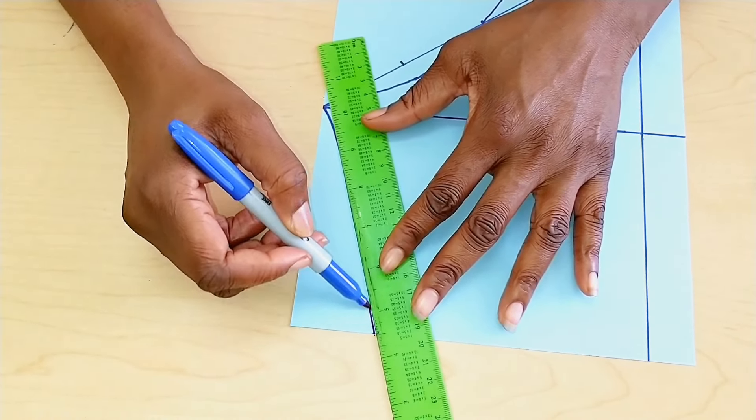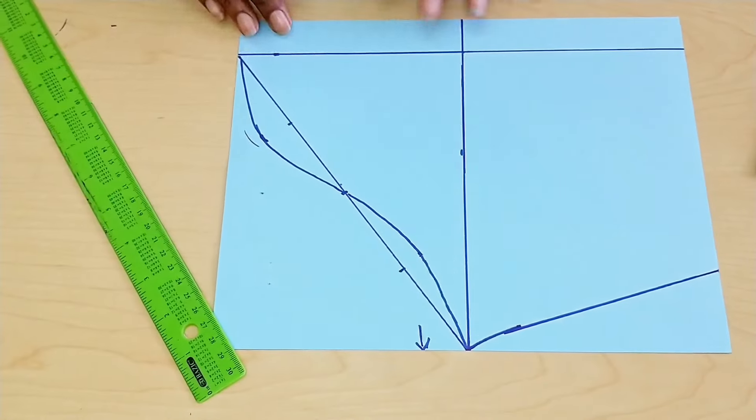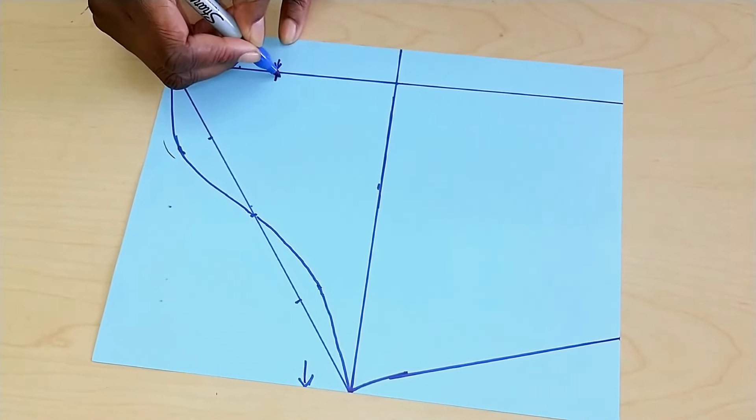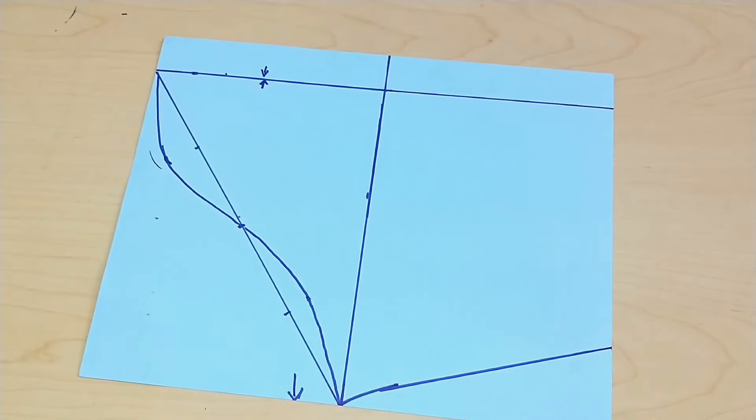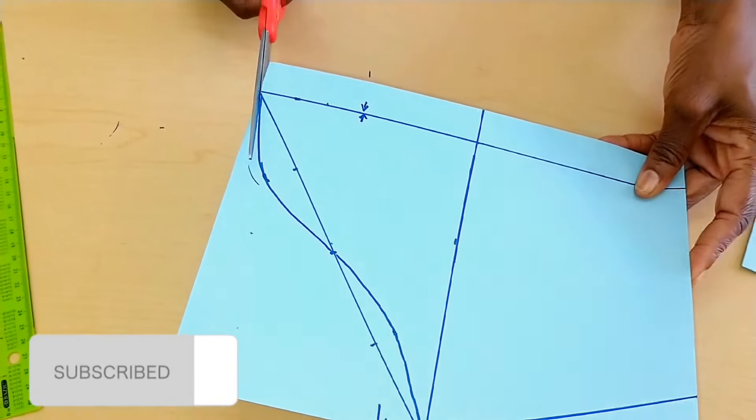And slant it slightly. So this, everyone, is what your sleeve would look like. This area here would be our fold, and at this point I'm just going to cut off my sleeve pattern.